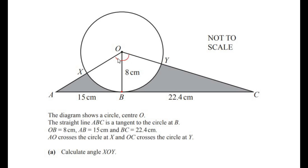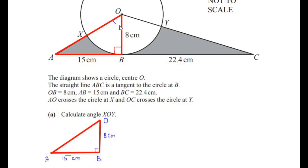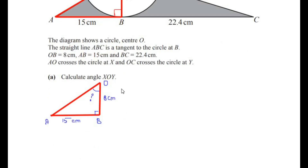Let us consider triangle AOB first. This triangle is right-angled at point B because of the property of the tangent with the radius — OB is the radius and it always makes 90 degrees with the passing tangent, which in this case is ABC. Let me draw this triangle separately as a right-angled triangle. We are trying to find this part of the angle, and to find it we are going to use one of the trigonometric ratios.